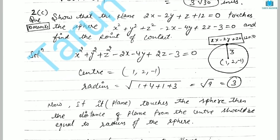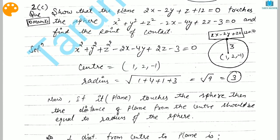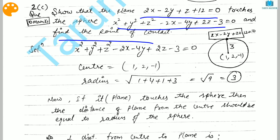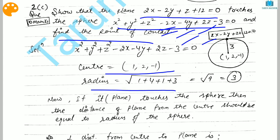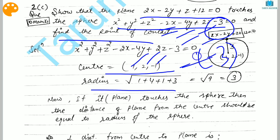The next question: we have to show that the plane 2x - 2y + z + 12 = 0 touches the given sphere, and find the point of contact. The center of the sphere can be calculated as the negative half of the linear coefficients, giving center (1, 2, -1). For the radius, square those values and subtract the constant term: √(1 + 4 + 1 - 3) = √3... After doing that, we get the radius equals 3.